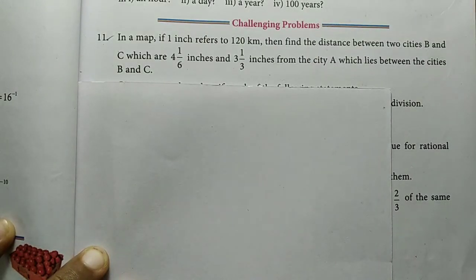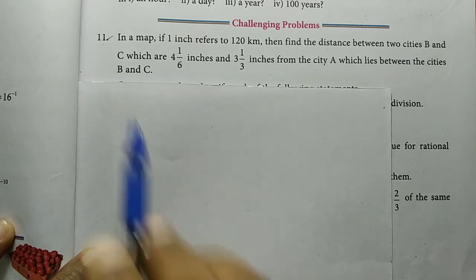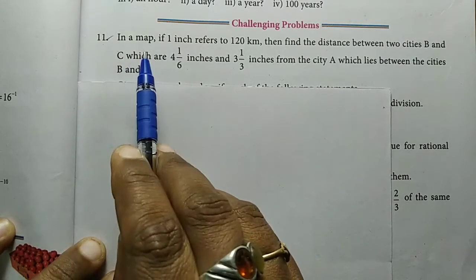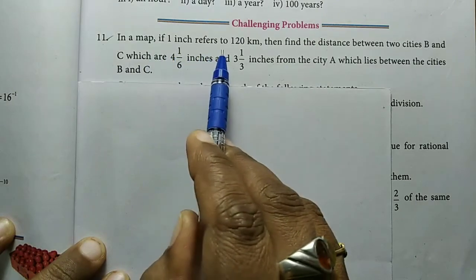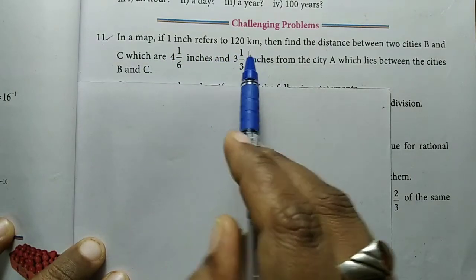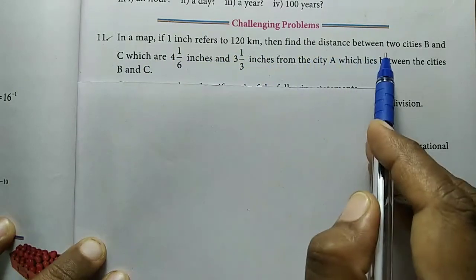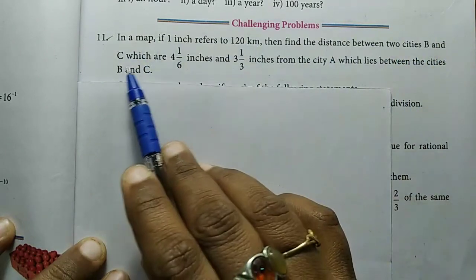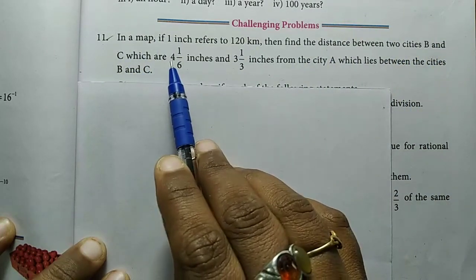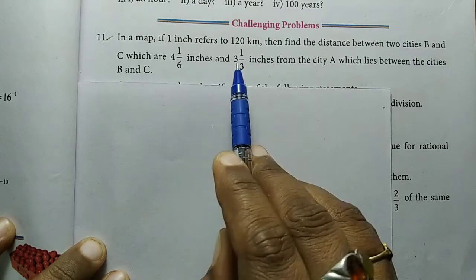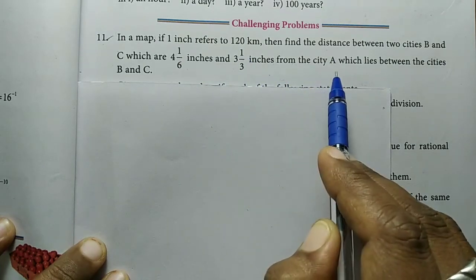Hello friends, welcome to VM Literacy channel. In this video, we'll solve 8th standard maths full book edition, Chapter 1, Challenging Problem 11. In a map, if 1 inch refers to 120 kilometers, then find the distance between two cities B and C which are 4 1/6 inches and 3 1/3 inches from the city A which lies between the two cities B and C.